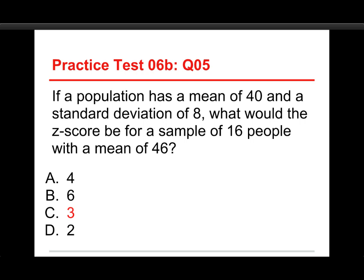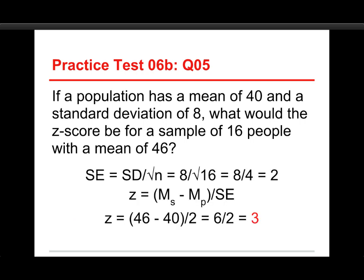The answer is 3. First, find the standard error: 8 divided by the square root of 16, which is 4, so 8 ÷ 4 = 2. Then the z-score is the mean of the sample minus the mean of the population, divided by the standard error: 46 minus 40, divided by 2, equals 6 ÷ 2 = 3. The sample is 3 standard errors above the population mean, which is an extraordinary amount. Because samples are more stable than individuals, and the larger the sample the more stable it is, any deviation from the mean becomes a bigger deal.